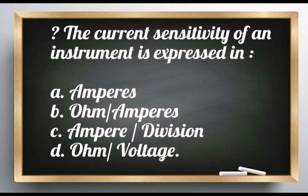Question: The current sensitivity of an instrument is expressed in: ampere, ohm per ampere, ampere per division, or ohm per voltage.